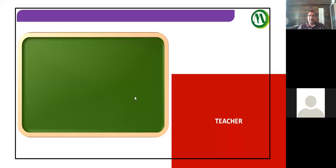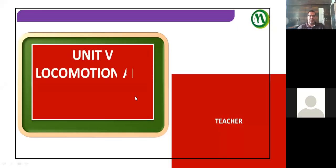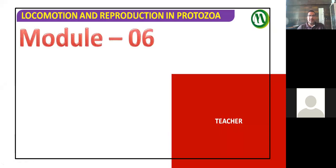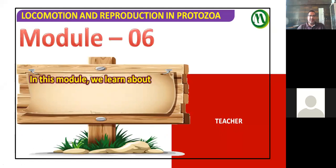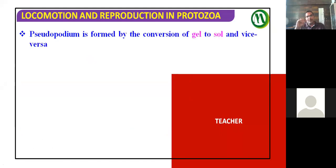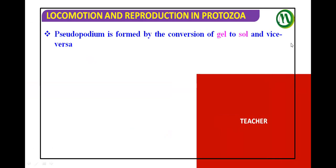Let's see more information about pseudopodia in module 6. In module 6, what you are going to learn about is Sol-Gel Theory — the theory which explains the formation of pseudopodia. The pseudopodia is formed by the conversion of gel into Sol and Sol into gel.